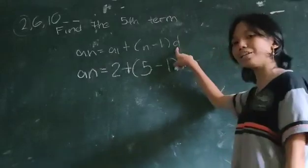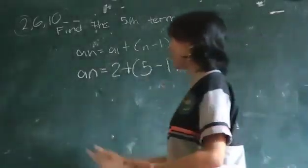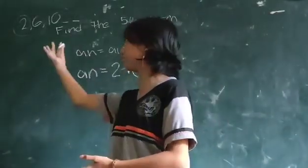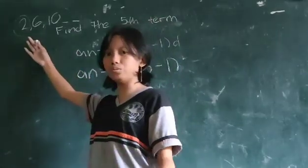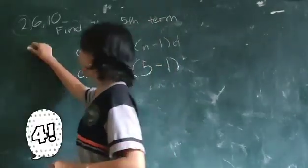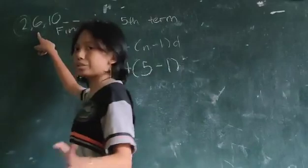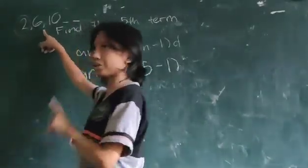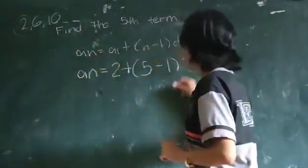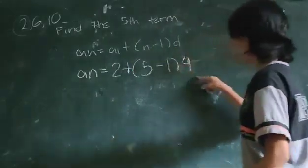And to find the common difference, we should add 2 to something to be 6. What should we add to 2? Correct! That's number 4. And to be sure, 6 plus 4 is equal to 10. So, the common difference is 4. Let's put it here.